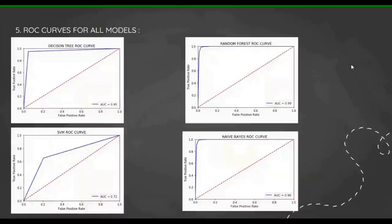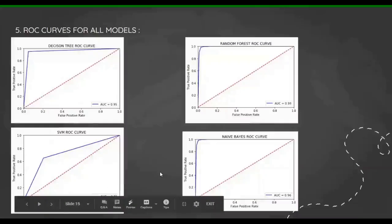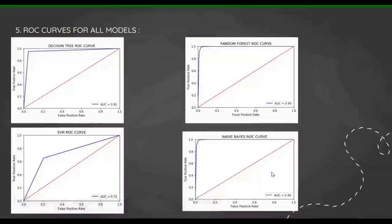Then I have plotted the ROC curve for all models. The ROC curve is basically the graph between true positive rate and false positive rate. The false positive rate is on the X-axis and the true positive rate is on the Y-axis. It signifies the area under curve (AUC). This graph signifies the importance of all the models, which one is the best suited. As you can see in random forest ROC curve, the area under curve is 0.99, which clearly means that it is behaving almost as ideal model for this problem. 0.99 is really good. You can see decision tree AUC is 0.95, SVM is 0.72 which is really bad, and Naive Bayes is 0.96.